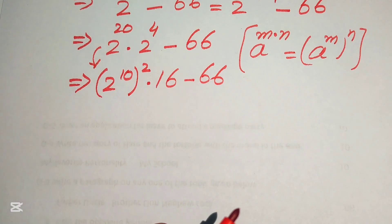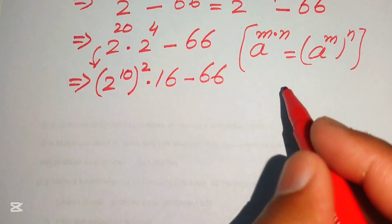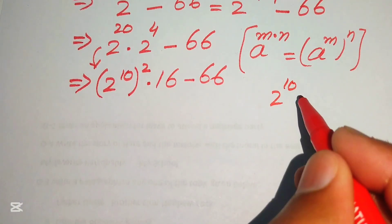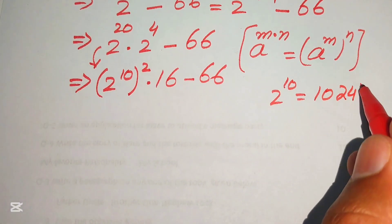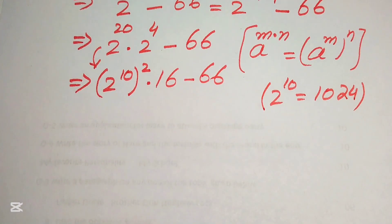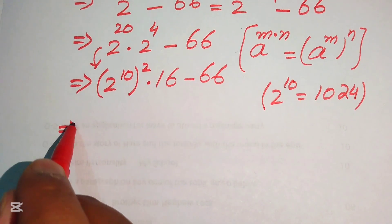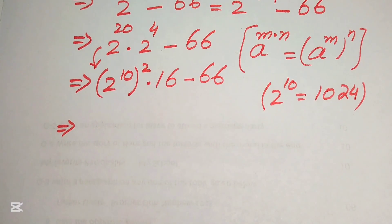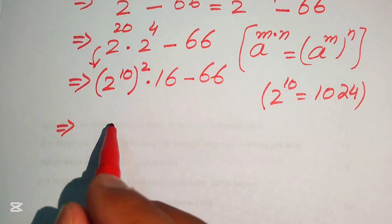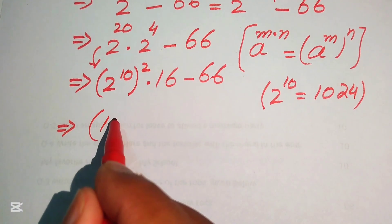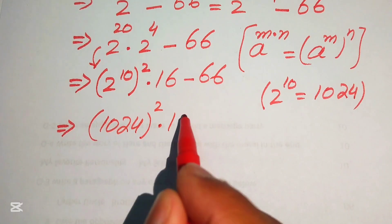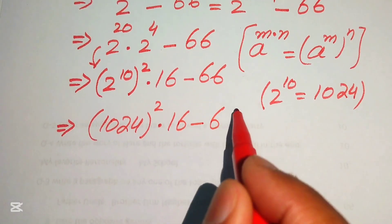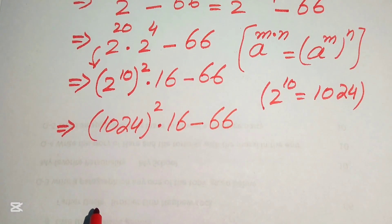We need to find the value of 2 to the power of 10. We know that 2 to the power of 10 equals 1024. We replace 2 to the power of 10 with 1024, so the expression becomes 1024 whole squared, multiplied by 16, minus 66.